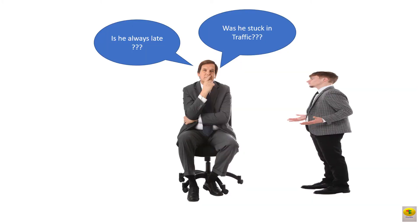Let's understand this process of attribution using this particular example. Here, a person is late for a meeting. We would want to know if he is a habituated latecomer — that is, is he always late — or was he stuck in traffic, meaning he was late only this time. It is difficult to be certain about this; however, there are theories that can help us make this judgment better.